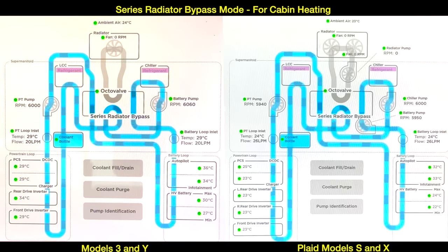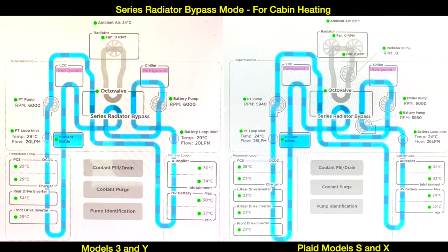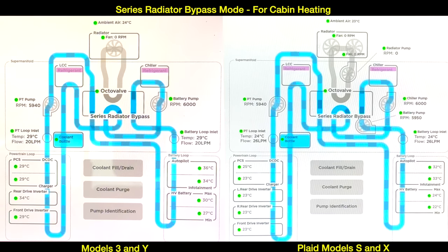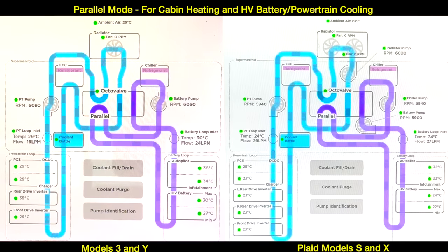The next mode is called series radiator bypass mode. The octo valve positions itself so that coolant no longer goes through the radiator. Heat energy is transferred from the battery into the coolant, then into the refrigerant, and then into the cabin for heating. In the next mode, the octo valve is positioned so that the powertrain loop and the battery loop are running in parallel with each other.